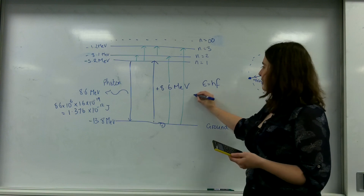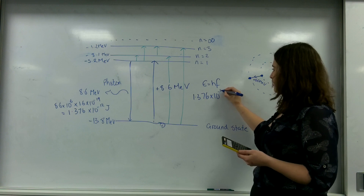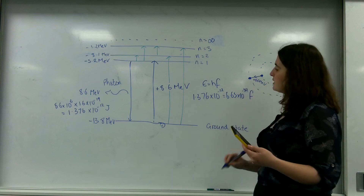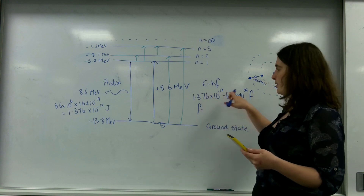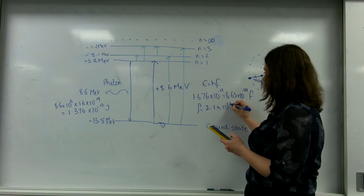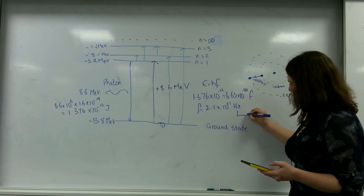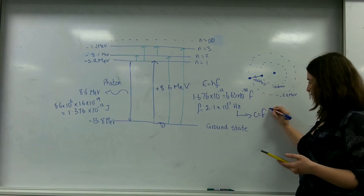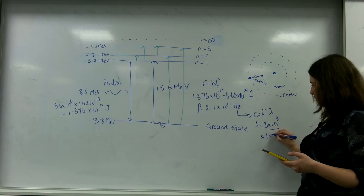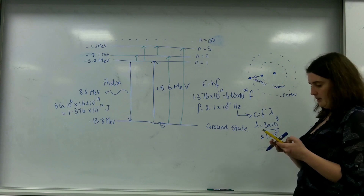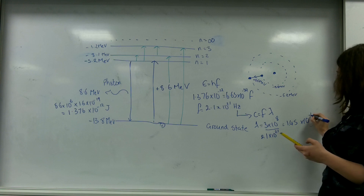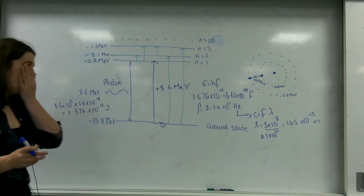Now let's find the frequency. E equals Planck's constant, 6.63 times 10 to the minus 34, times the frequency. So my frequency equals this energy divided by Planck's constant, which gives 2.1 times 10 to the 21 hertz. Using c equals f lambda, the wavelength is 3 times 10 to the 8 divided by 2.1 times 10 to the 21, giving 1.45 times 10 to the minus 13 metres. So that is the wavelength of the photon emitted here.